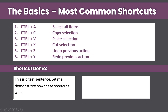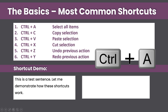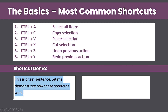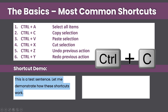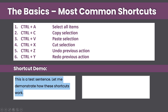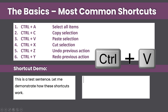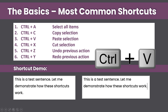The first is Ctrl+A. If I press Ctrl+A, you can see it has highlighted both of these sentences — everything in this text box. The second is Ctrl+C. I'm going to press Ctrl+C on my keyboard, and that has now copied everything I highlighted. The third keyboard shortcut is Ctrl+V, and that has now pasted everything that I selected and copied.